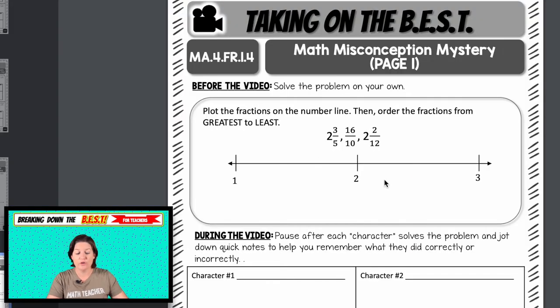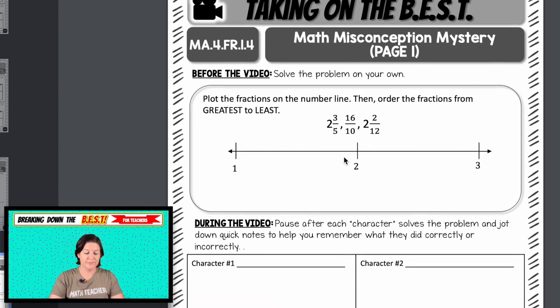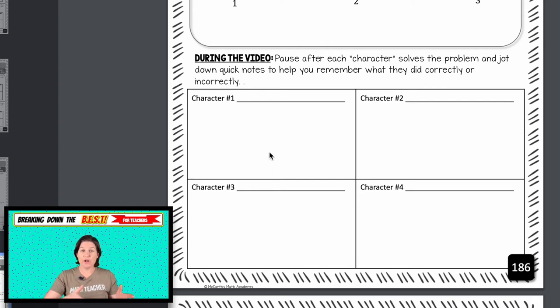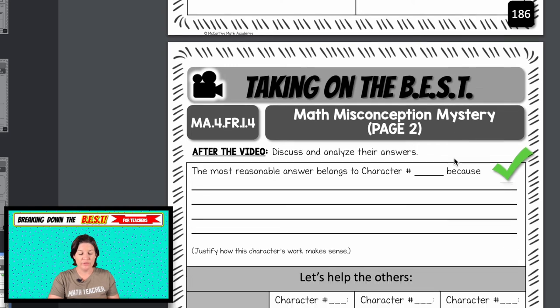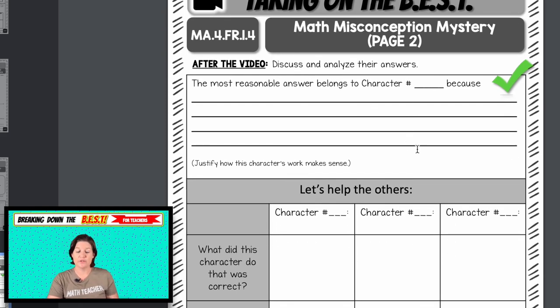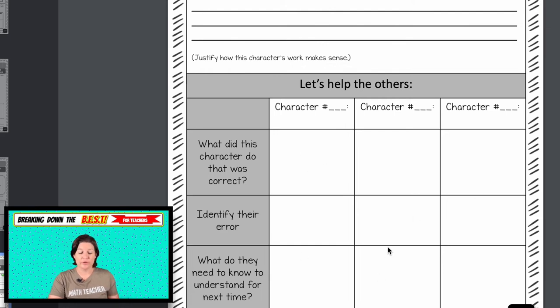I'll say, okay, here's your problem. Go ahead and solve it on your own. So it says plot the fractions on the number line, then order the fractions from greatest to least. And then students will, after they solve the problem on their own, students will watch as four characters also solve that same problem. Three of those characters will make a mistake and only one of them will solve it correctly. Those characters, of course, are just me dressed up in silly costumes with silly accents and having fun with it. Once you start these math misconception mysteries, your students are going to beg you for more. So be careful. After they watch all of the characters solve, students will then be able to state who the most reasonable answer belongs to and evaluate the work of the other three. This is awesome for friendly debates for math discourse to get your students talking and thinking and analyzing those errors.